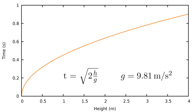We will repeat this experiment a few times for different heights. The resulting times should be the square root of two times the drop height divided by the earth's acceleration, which is 9.81 meters per second squared. So for example, a drop from 1.2 meters should take about half a second.